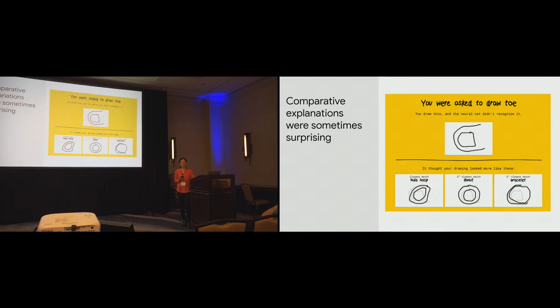So, at this point, you might be wondering why normative explanations might have had an effect, whereas comparative explanations, we did not see a significant effect. And when we looked at the data, we found that comparative explanations were sometimes quite surprising. So, let's say a user drew this toe, and the top three predictions were a hula hoop, donut, and bracelet.